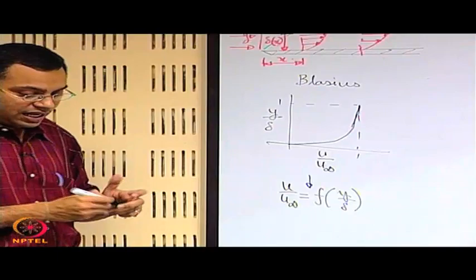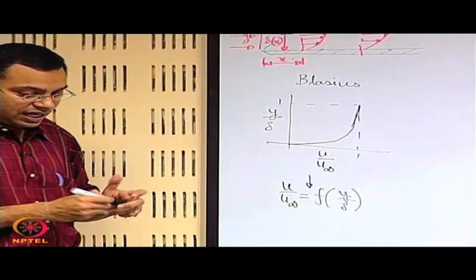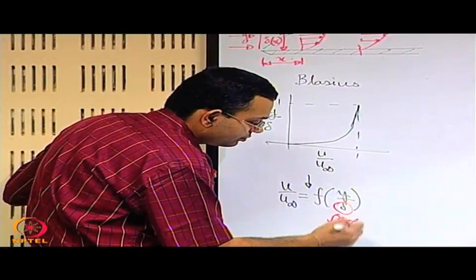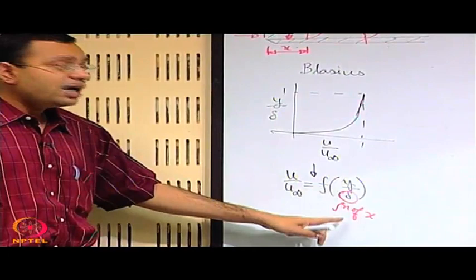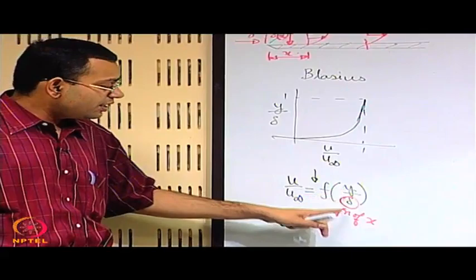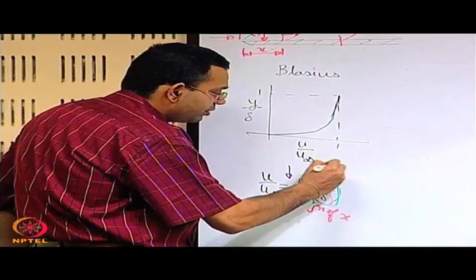This gives a very important physical insight: u/u∞ is a single-valued function of y/δ. From the order of magnitude analysis, we know that δ is some function of x — it scales with the square root of x. So both y and x dependence are present. We may introduce a new variable eta, like y/δ, which as a single variable dictates the behavior.